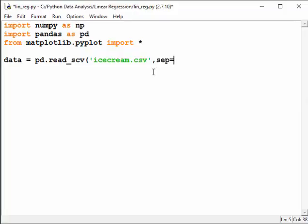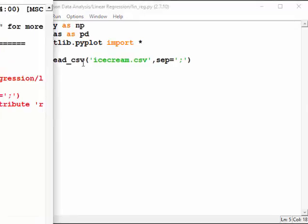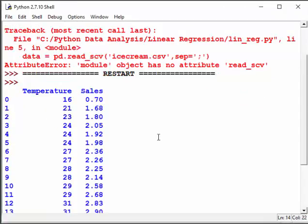Separator is a semicolon. And let's look at this data by issuing a print command. And this is our data.